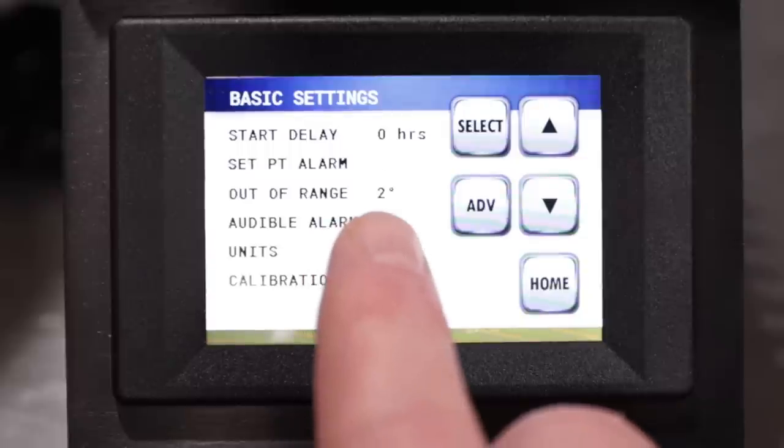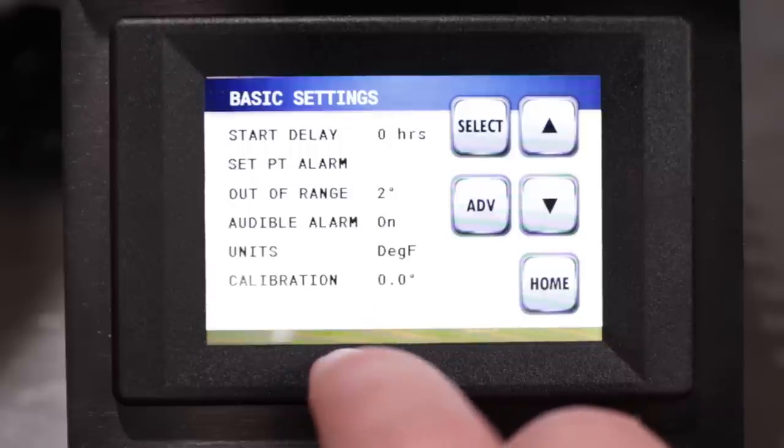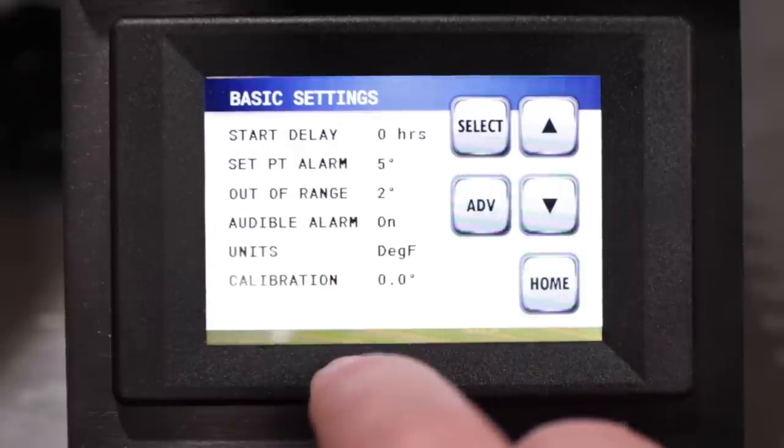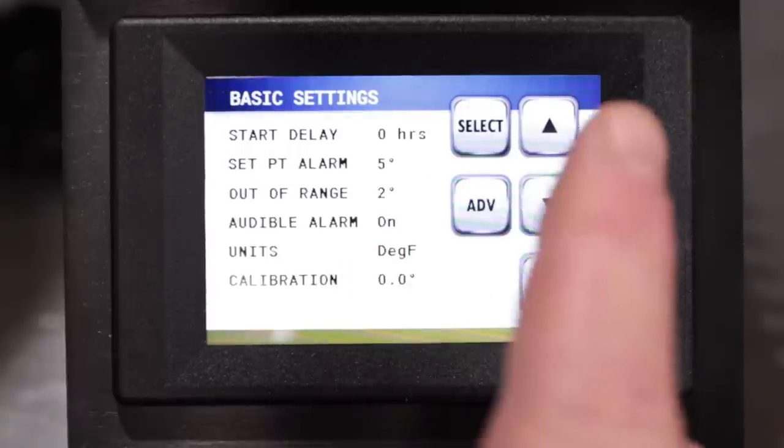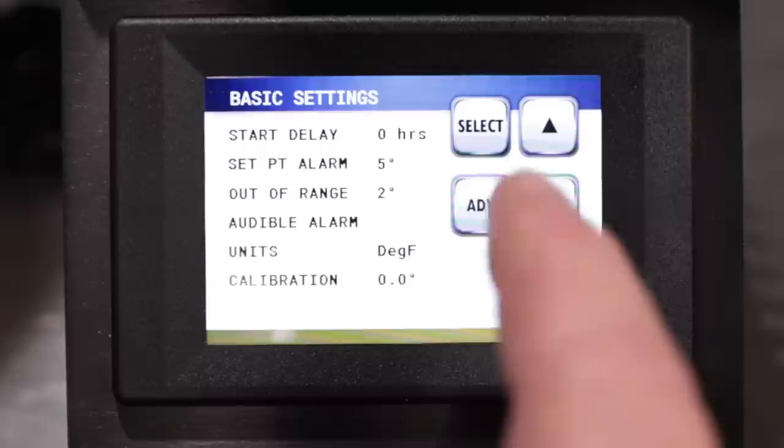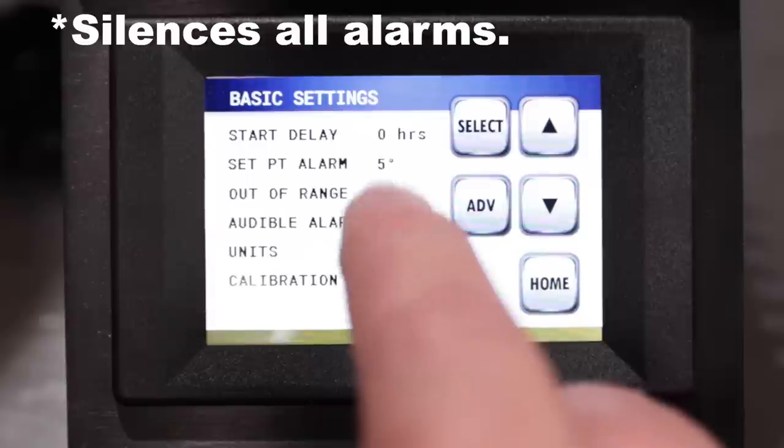Now what the set point alarm is, that will actually notify you when you're getting close to your temperature. So you could set that for 120 degrees. At 115, it will notify me that I'm getting close to my set point. There's also an out of range notification. So if the mash or whatever temperature you have it set for goes above two degrees above its set point, it will actually give you an audible alarm as well.